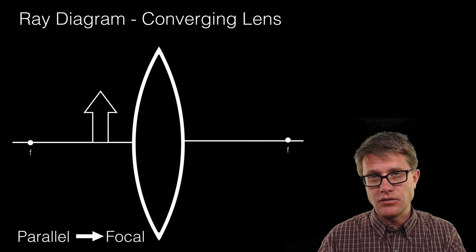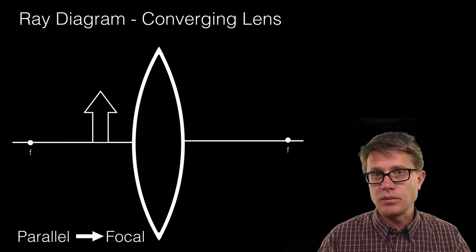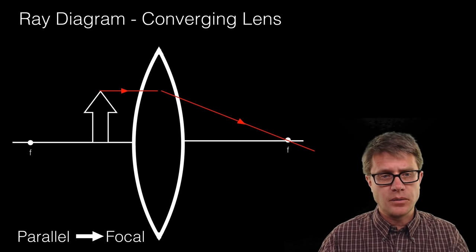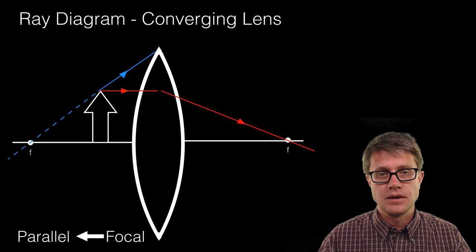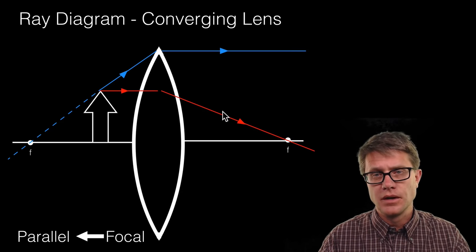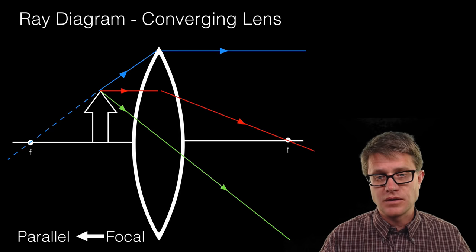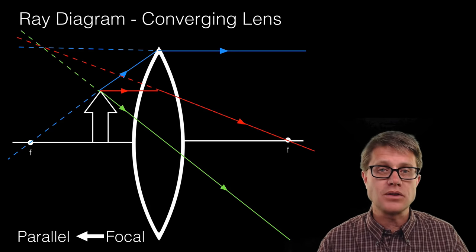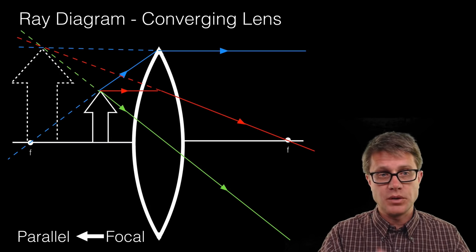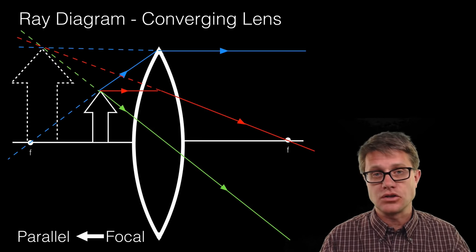Now let's watch what happens when we move the object inside the focal point — it gets a little weird. We again draw from the top of the object parallel into the lens, but now since we are inside the focal point the ray going toward the focal point looks different. On the other side of the lens, these two rays are diverging from each other — they are not going to intersect at any point. So we are not going to find an image on the right side. We have to trace those lines backwards, including the line through the center. All of these are diverging, so we play those lines backwards. The image is going to be on the same side as the object — we now call this a virtual image. You could put a piece of paper there and it would simply not show up, but that is where it appears to be.